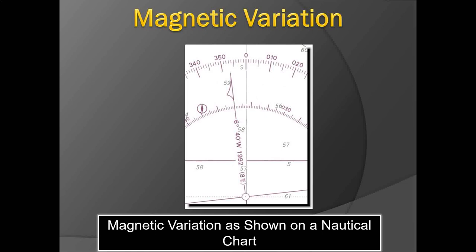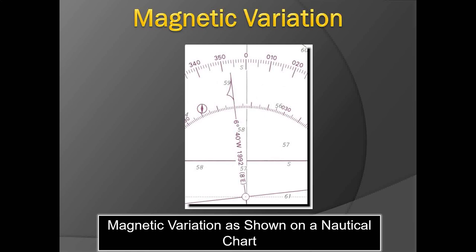Variation, as shown on the nautical chart, refers to the earth's magnetism at a particular place and area. When the ship transits through that area, along with its own magnetism (deviation), it is also influenced by the earth's magnetism (variation). Variation varies with geographical position, whereas the ship's magnetism (deviation) varies with heading. The compass needle is deflected by the ship's own magnetism, and that deflection is called magnetic deviation.